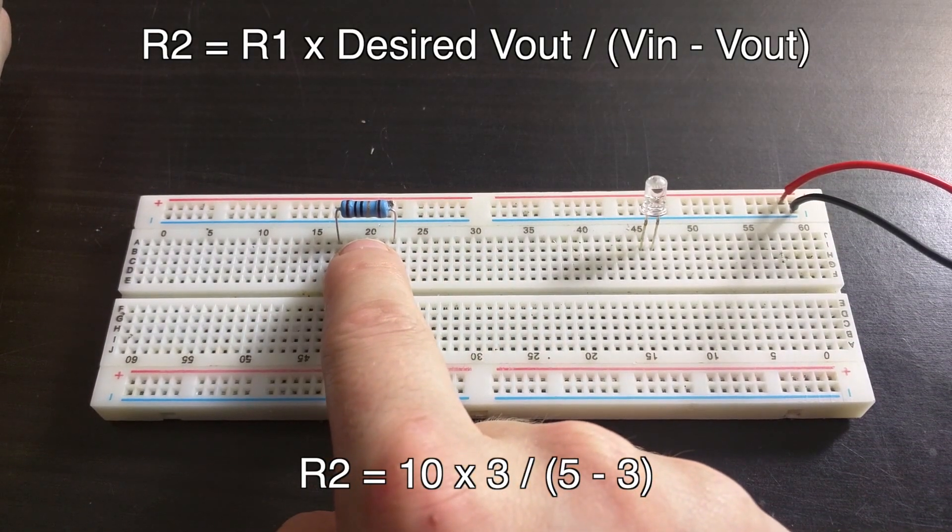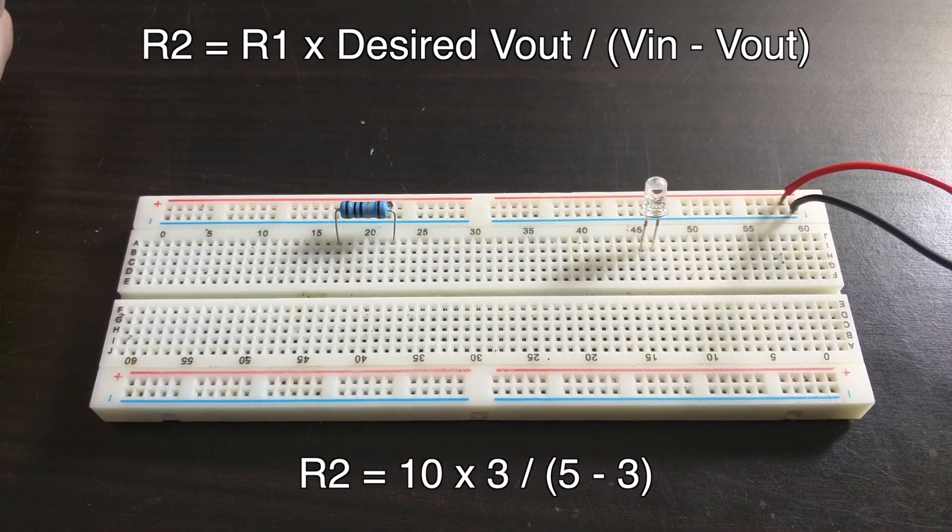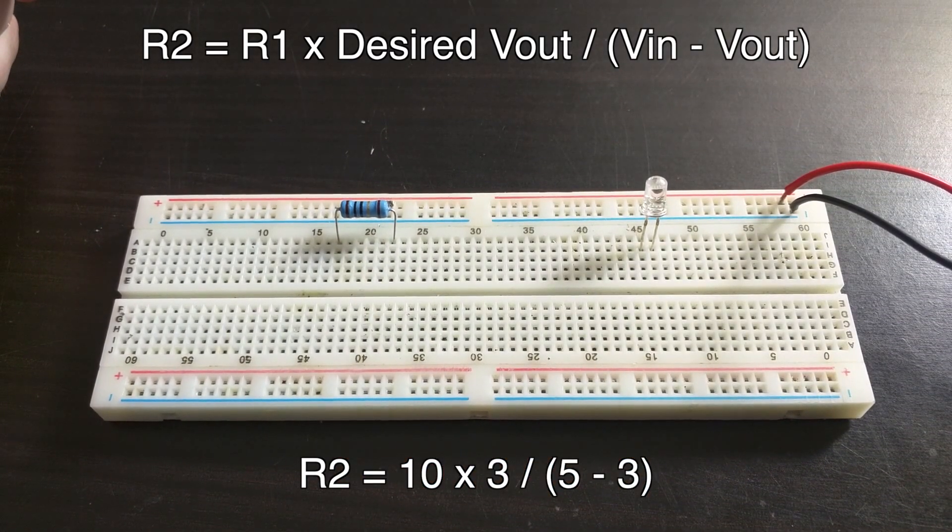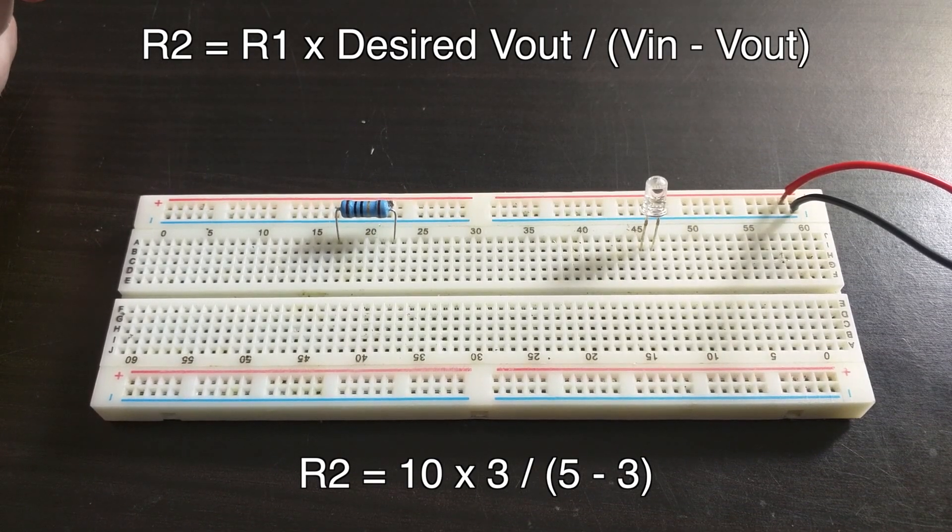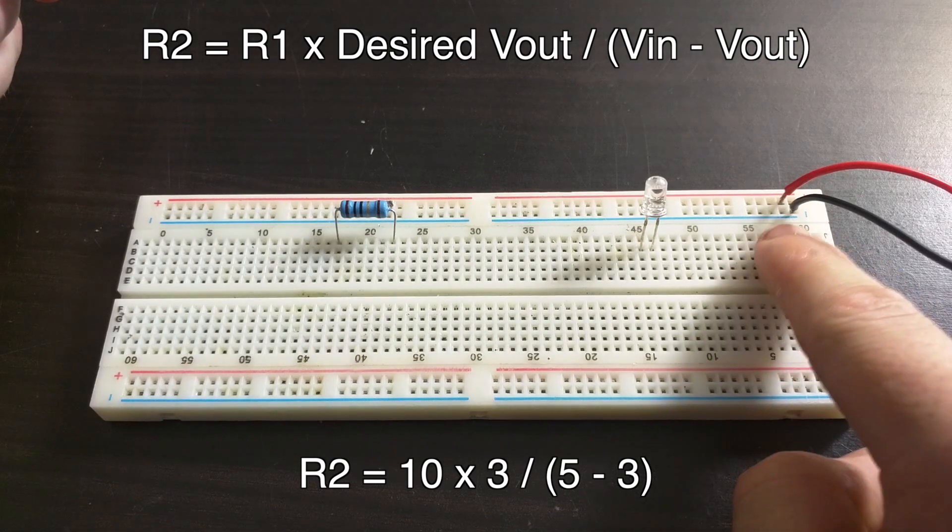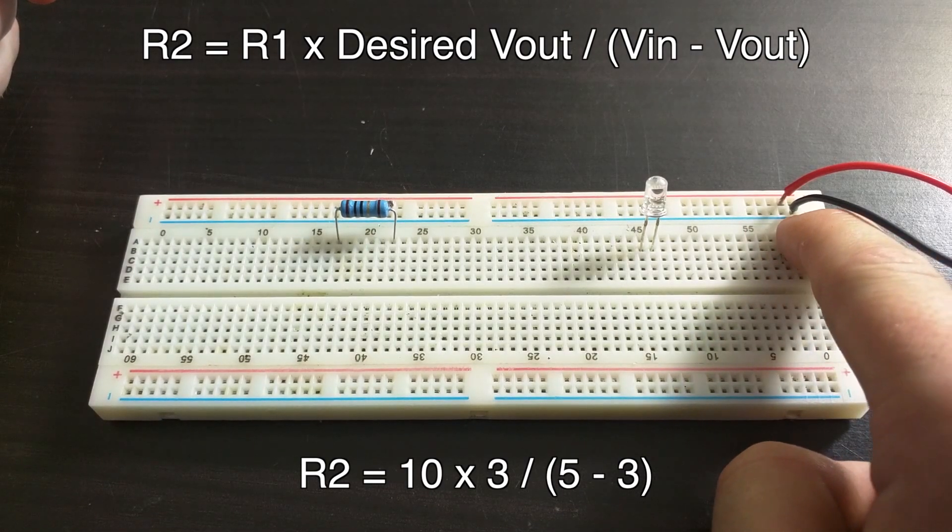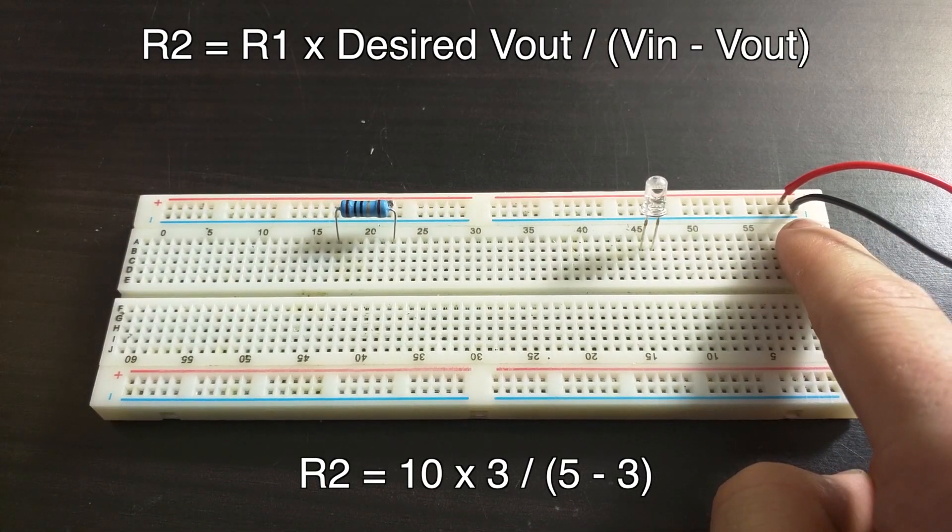So resistor 1, 10 ohms, times the desired voltage out, which is 3 volts, so 10 times 3 is 30, divided by voltage in, which is 5 volts coming in to the breadboard here, minus my desired voltage out.